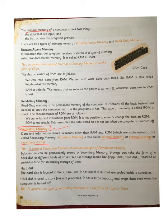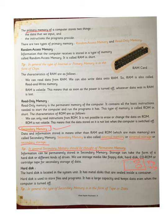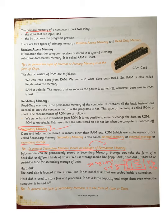In general, secondary memory should be thought of as permanent memory. RAM and ROM are very small in size — sometimes only 4GB, 8GB, or 16GB — but our hard disk, which is the external memory, has a very large capacity, sometimes 1TB or 5TB. Whatever work we are doing is automatically saved on the external memory, that is our hard disk.